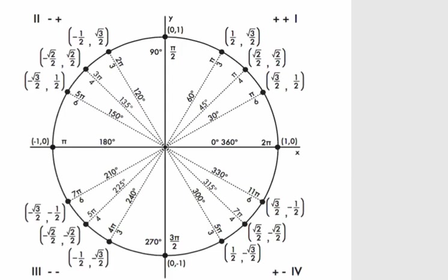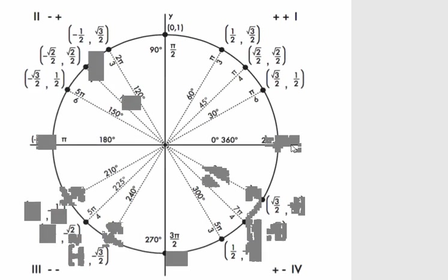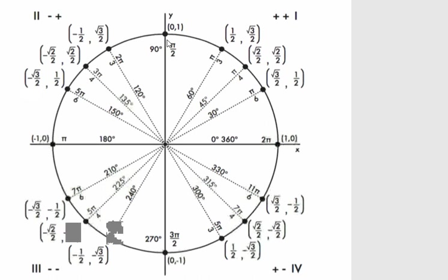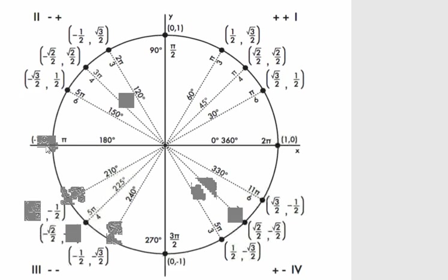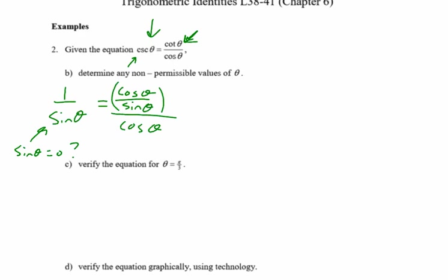Now I can see it a little more clearly. Looking at 1 over sin θ, I have to ask: when is sin θ equal to zero? From the unit circle, sine is the y-value, so it's equal to zero at 0 degrees and at π, and then every π radians after that. So θ cannot equal 0, π, 2π... Technically, you'd write that as θ cannot equal πn, where n is a member of the integers.